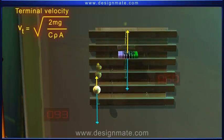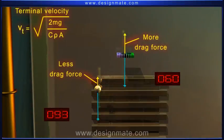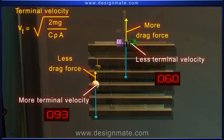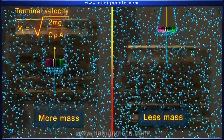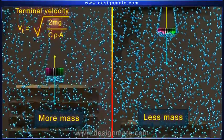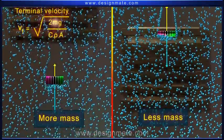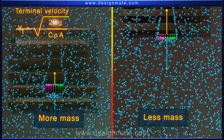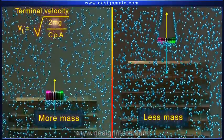More the amount of drag force acting on an object, less will be the terminal velocity. Terminal velocity of an object on earth also varies directly with its mass. Massive bodies have greater terminal velocities and hence fall faster than lighter bodies.